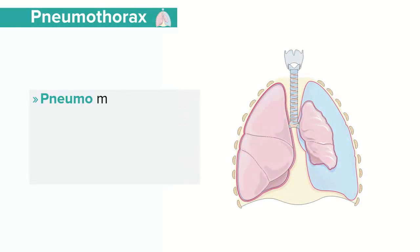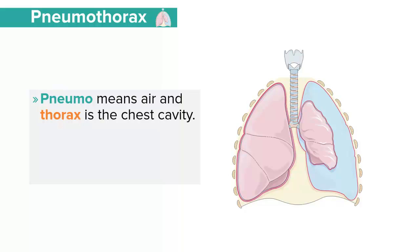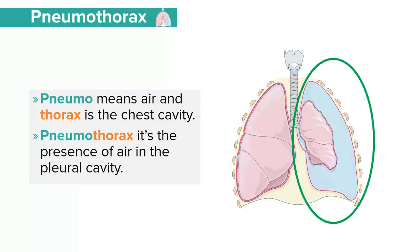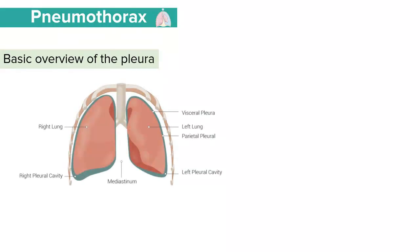Pneumothorax is a name derived from two Greek words: pneumo and thorax. Pneumo refers to air and thorax is the chest cavity. When we say pneumothorax, this is an accumulation of air in the pleural cavity. Let's have a look at the basic anatomy of the pleura and the pleural membranes to understand pneumothorax well.